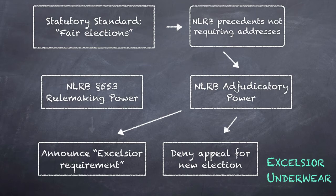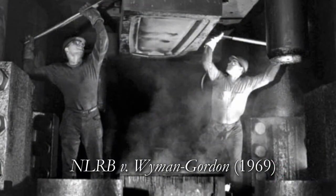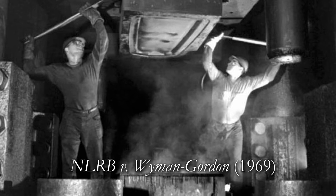The validity of the Excelsior requirement was called into question in the subsequent Wyman-Gordon case. The board ordered the employer to furnish a list of employee names and addresses to the unions seeking certification. The employer refused, the election went on anyway, and the unions lost. The board set aside the result and went to court to enforce a subpoena against the employer to produce the Excelsior list. The district court ordered Wyman-Gordon to comply, but the First Circuit Court of Appeals reversed on the ground that the board was seeking enforcement of a procedurally defective rule, the Excelsior requirement.